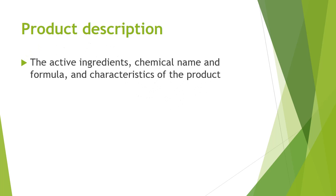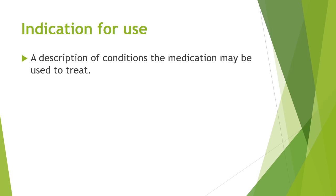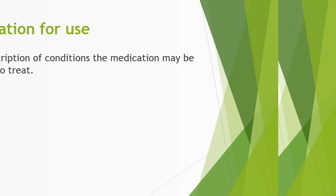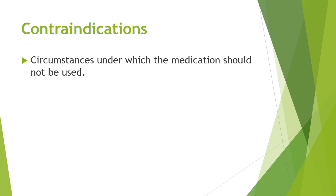Product description: the active ingredients, chemical name and formula, and characteristics of the product are placed in this section. Indications for use: a description of conditions the medication may be used to treat is explained in this insert. Contraindications: circumstances under which the medication should not be used are identified.